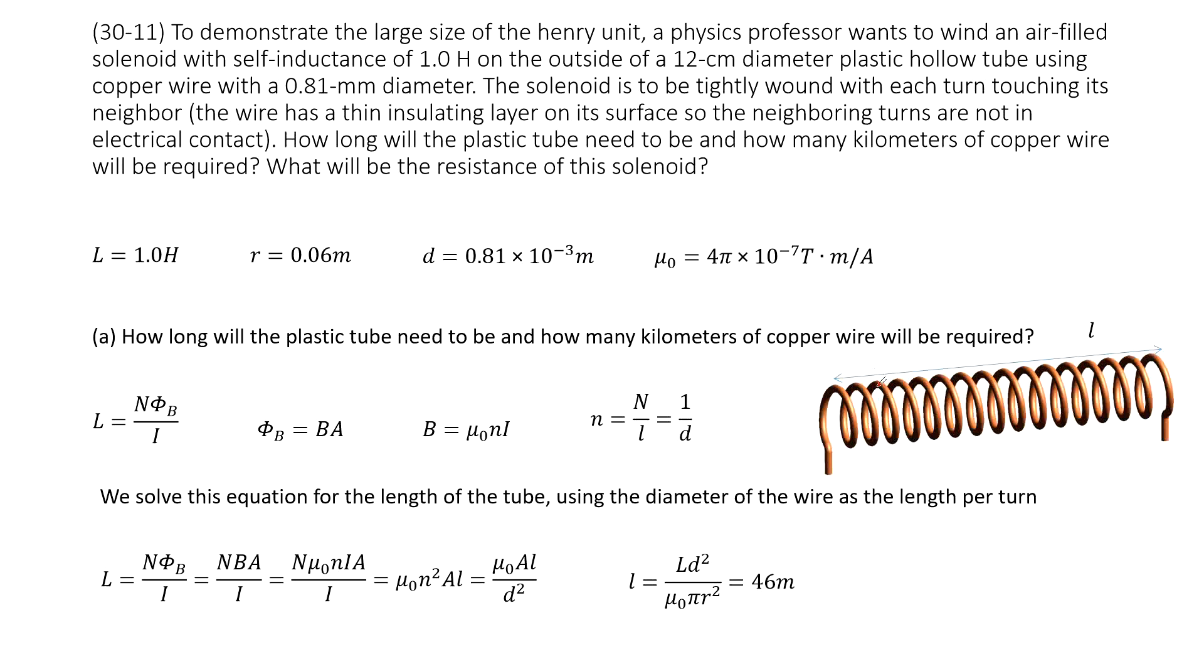You can see we have a solenoid made up from copper wire. Some quantities are given, like inductance, the radius for this solenoid, the diameter for this wire, and μ₀ is a constant. The first part asks how long will this plastic tube need to be?